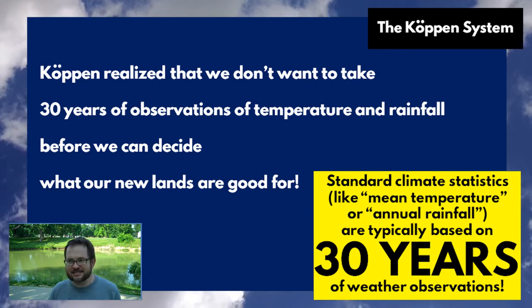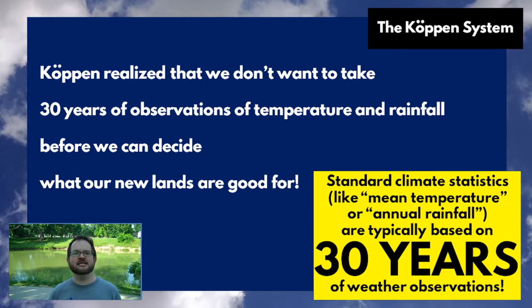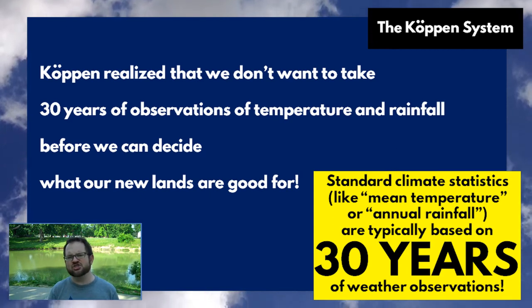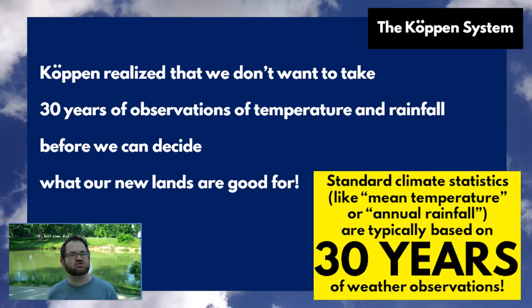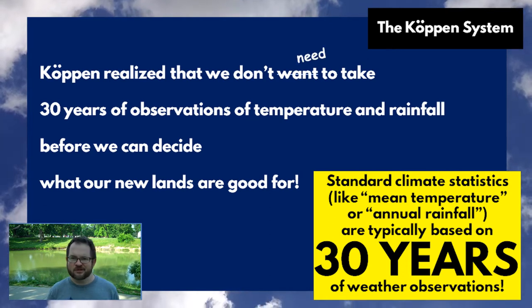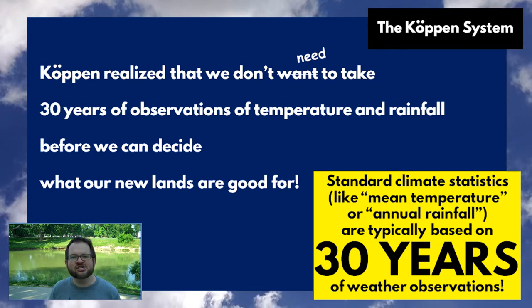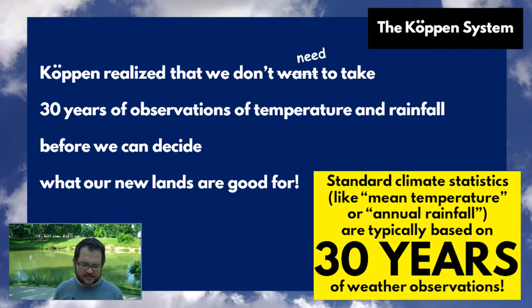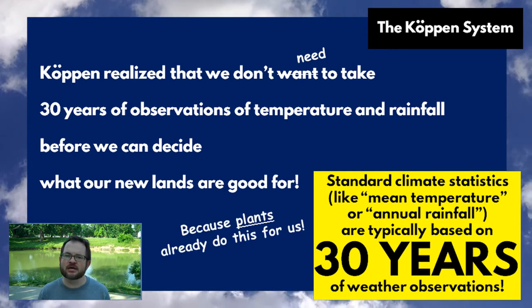What he really wanted to know was: how do you just show up at a place and decide what you can do with it? Köppen realized that you don't need to take 30 years of observations because plants are already doing that for us.